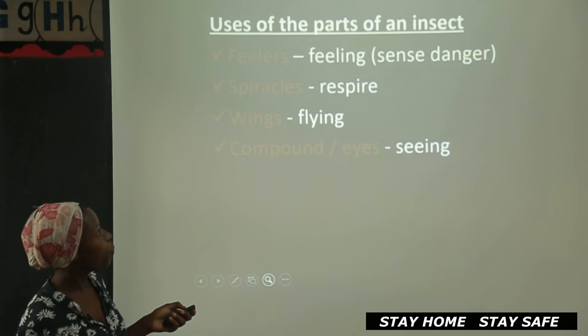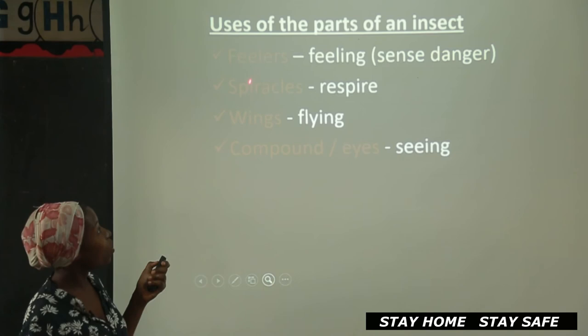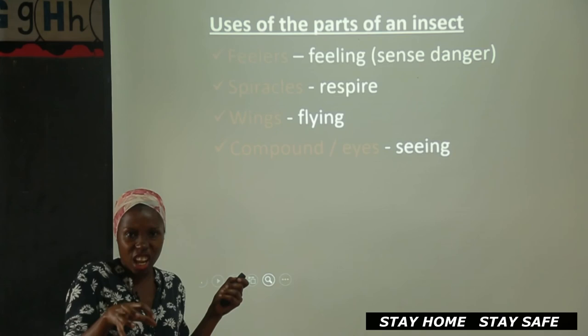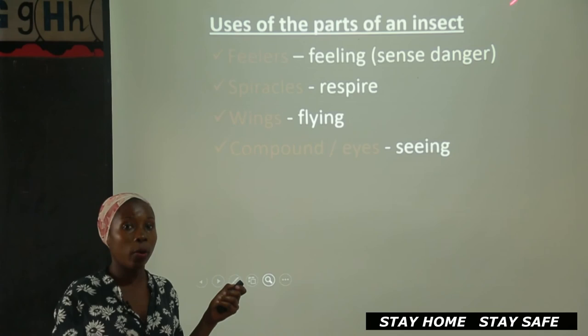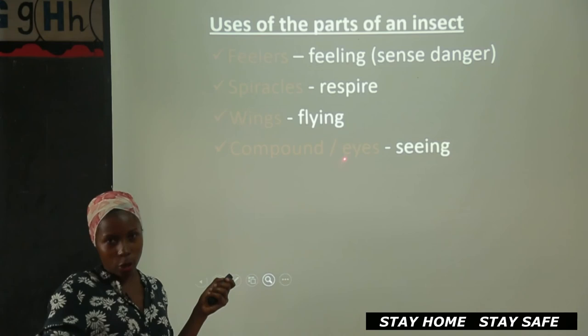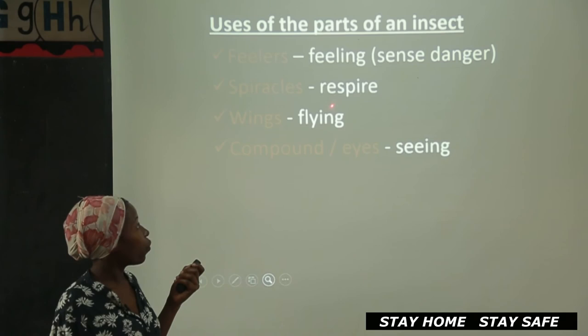Uses of parts of an insect. We have the fillers — another name for fillers is antenna. The antenna are used for feeling. They can detect an enemy. If you're about to touch or catch an insect, it will tell from a distance and then fly away. It's very difficult to catch them because they have those fillers — they keep moving them and they will be able to detect that something is coming close to them. The spiracles are used for respiring or breathing. The wings are used for flying, and the compound eyes are used for seeing.